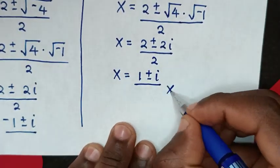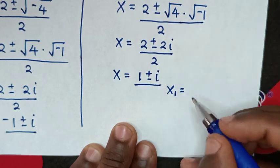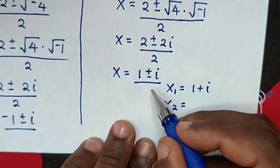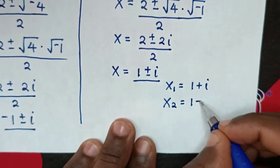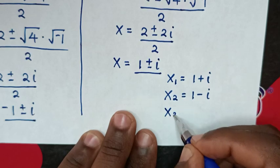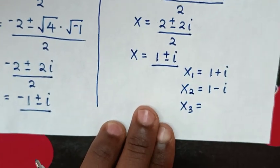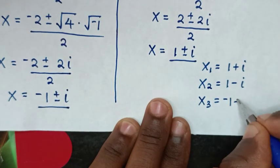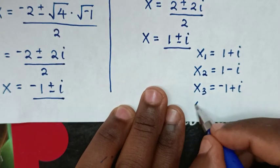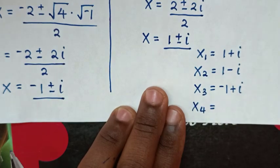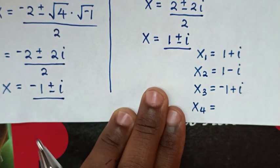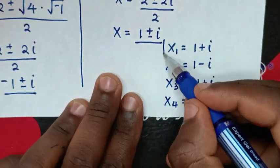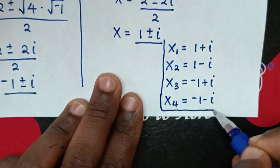Therefore the four values of x are: x equals 1 plus i, x equals 1 minus i, x equals negative 1 plus i, and x equals negative 1 minus i. So these are all the 4 values of x.